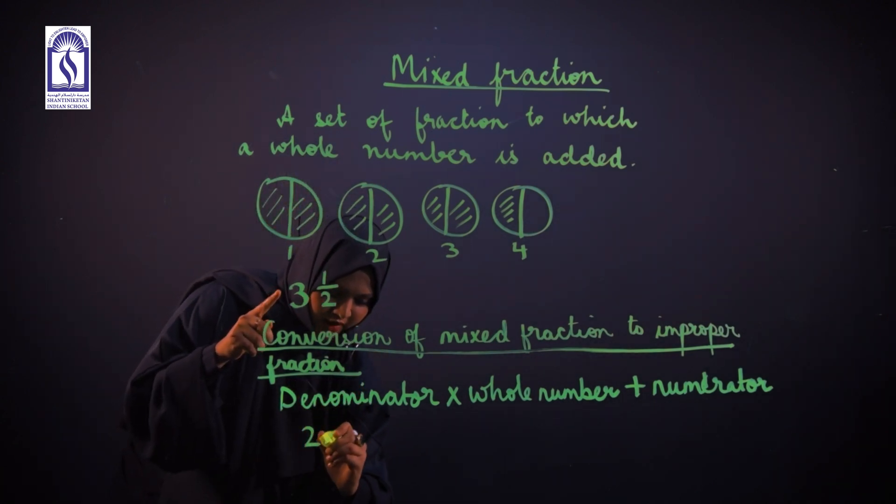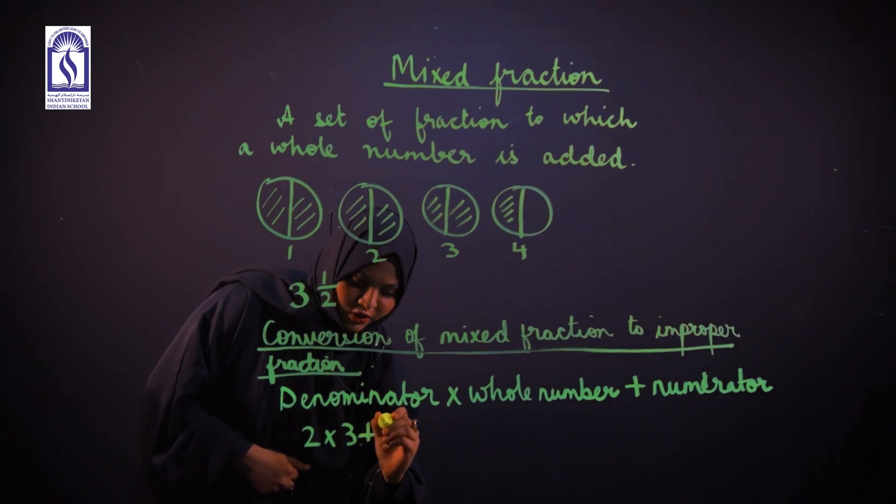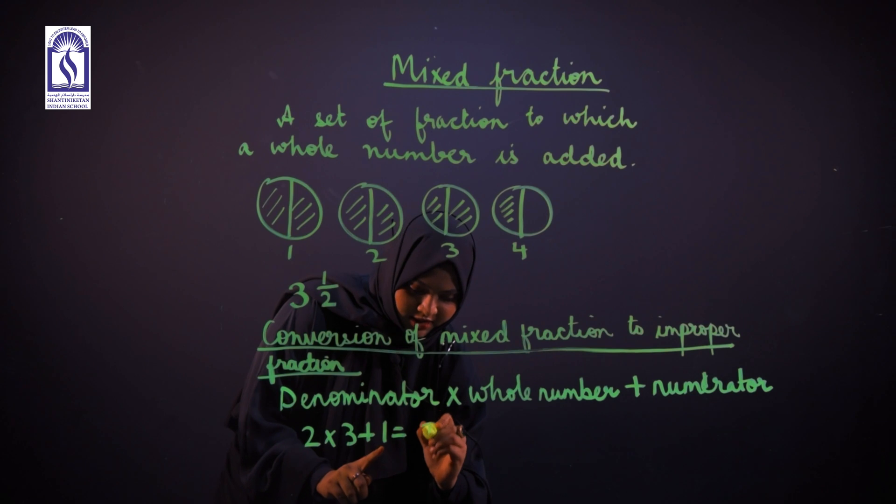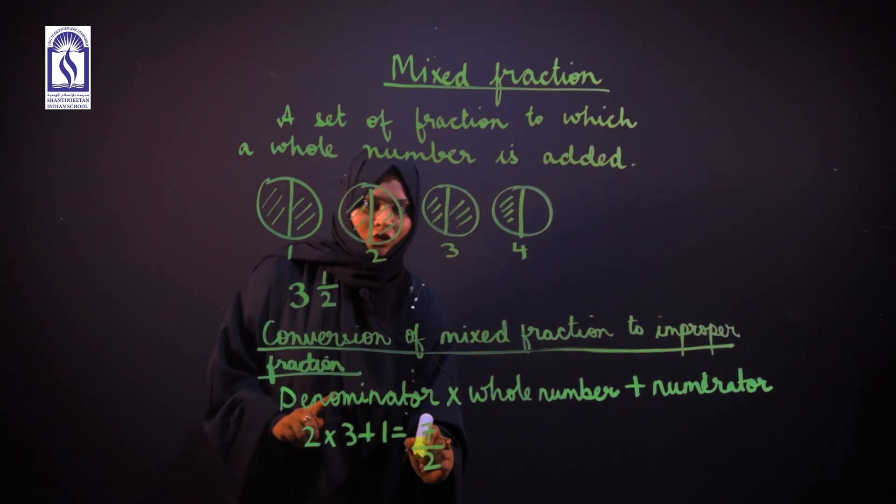Example: 2 × 3 (3 is the whole number here) plus 1. 2 × 3 is 6, plus 1 is 7. So the improper fraction is 7/2.